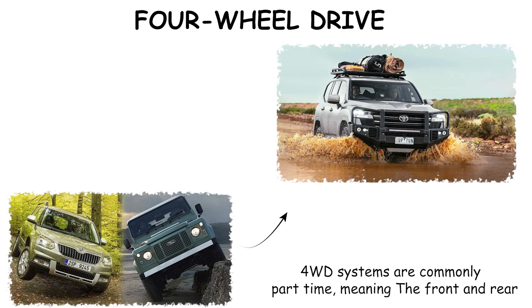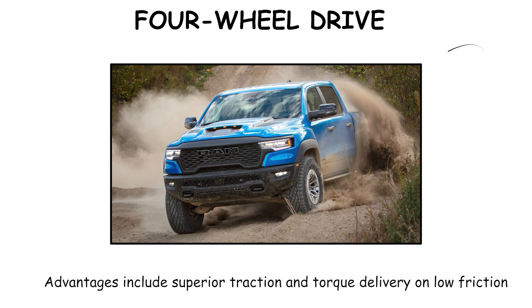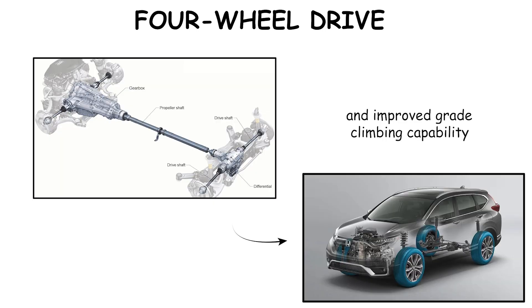Four Wheel Drive systems are commonly part-time, meaning the front and rear axles are mechanically locked, suitable for loose surfaces but unsuitable for dry pavement. Typical applications include sport utility vehicles and off-road vehicles designed for mud, sand, snow, and rough terrain. Advantages include superior traction and torque delivery on low-friction surfaces and improved grade climbing capability.